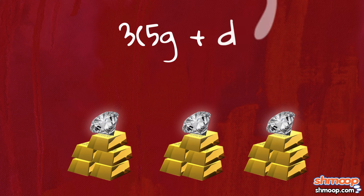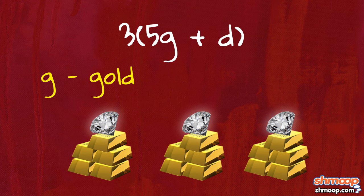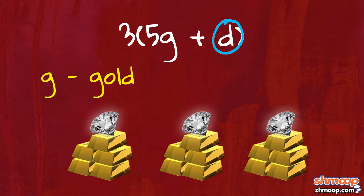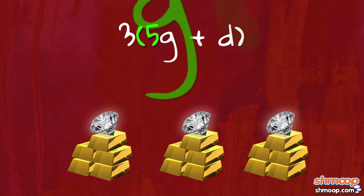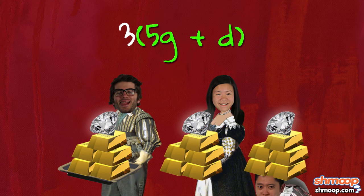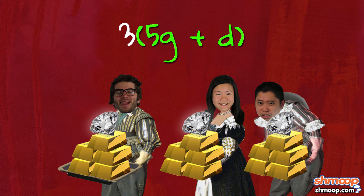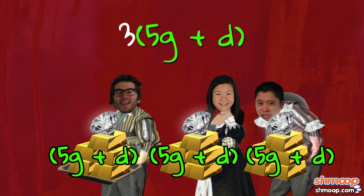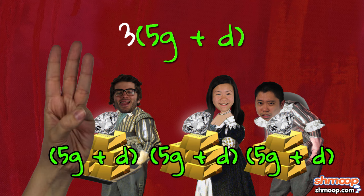Three times five G plus D, where G stands for a gold bar, and the five that multiplies the G stands for the amount of gold total, and D stands for diamond. The stuff in parentheses represents what each steward presented to the king — five gold bars and a diamond. And because there were three of them, we can multiply the whole thing by three.